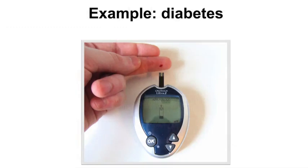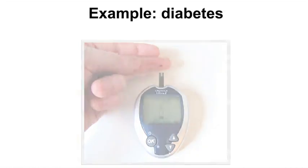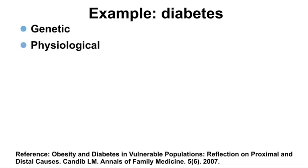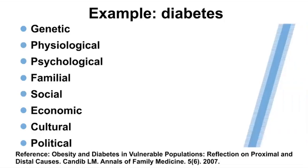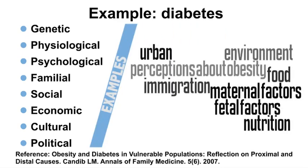Now we will discuss a different disease example: diabetes. The cause of diabetes may have genetic, physiological, psychological, familial, social, economic, cultural, and political aspects. For example, events that occur during fetal development and maternal factors may influence whether someone gets diabetes later in life. Genetic factors play a role. Social factors such as nutritional change to eating higher calorie and higher fat foods, urbanization, immigration, and cultural perceptions of what it means to be overweight or obese may have an effect. Economic factors such as changes in the cost or availability of food in certain areas may also play a role in the development of diabetes.